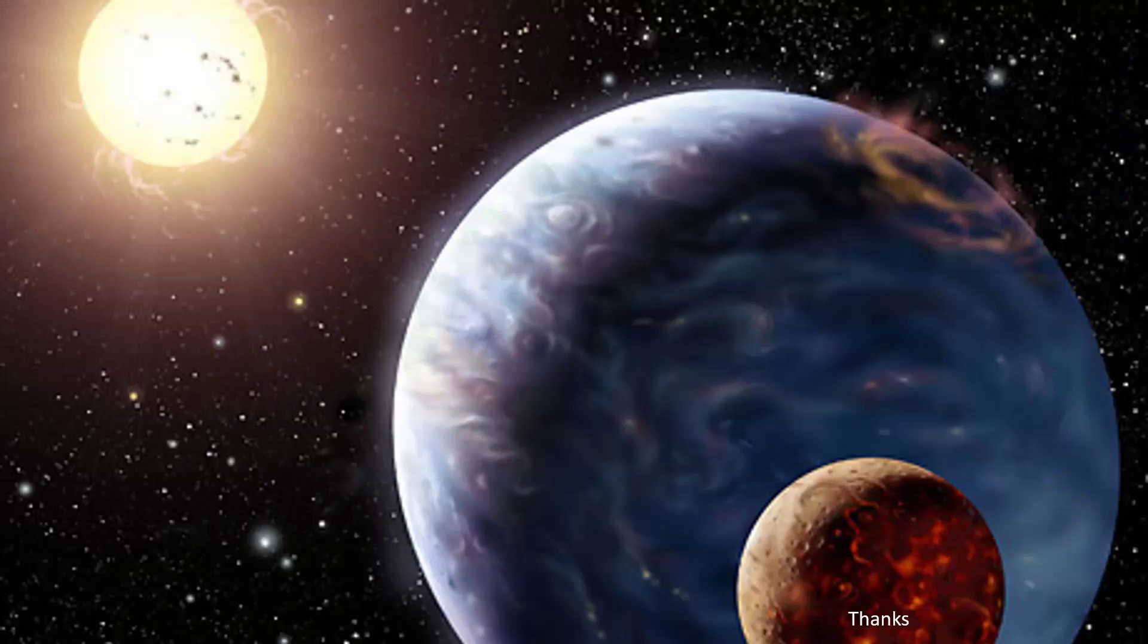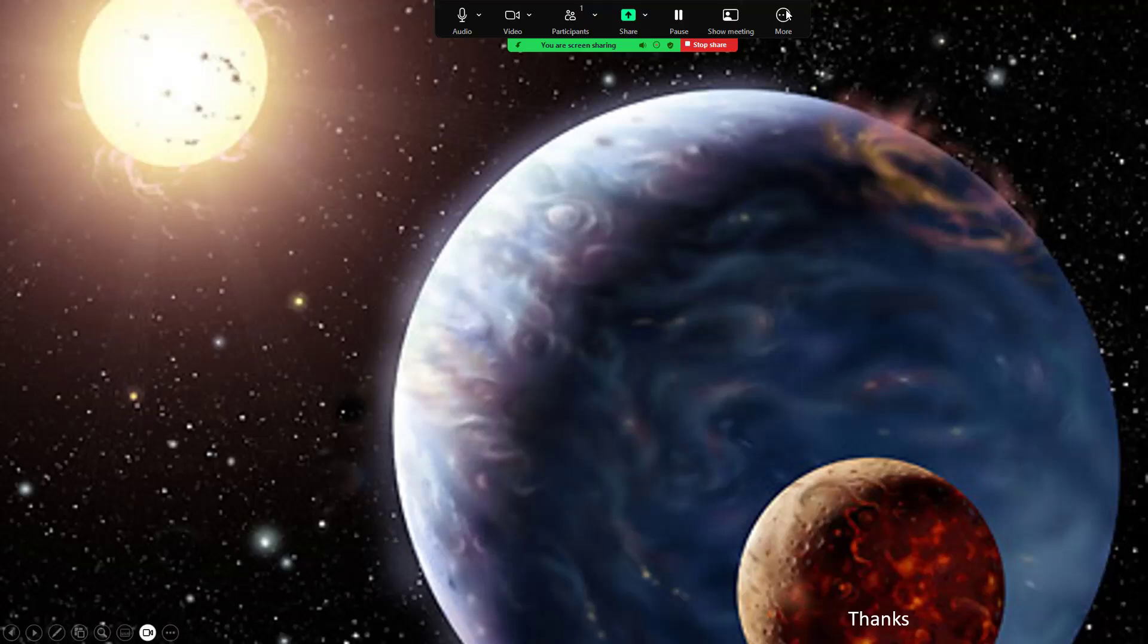Now, the distribution of planets that we've been finding since the techniques have been getting better are still biased towards the big planets close in. But we're getting much greater spread now. And our solar system is beginning to look a little bit less unusual. And that's probably a nice thing if you're thinking about the possibility of habitable worlds beyond the sun. So with that, I'll leave it there. Thank you very much for listening, and I hope you've enjoyed it.